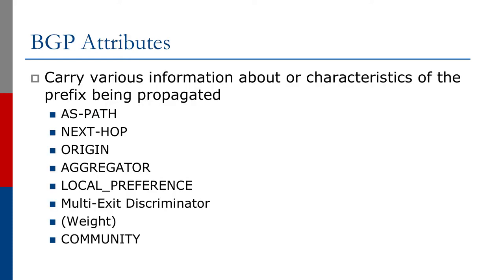The attributes we're going to look at in this section include the AS path, the next hop, the origin, the aggregator, local preference, multi exit discriminator, and the community.